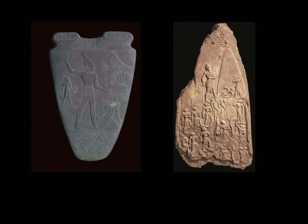Comparing the Palette of Narmer with the Stele of Narmer, we can see many similarities. Both figures are shown from a composite point of view — we see their chests from the front and their limbs and head in profile. Both show symbolic references to bulls symbolizing power and the ability to conquer enemies, and both use hieratic proportion to emphasize the relative importance of Narmer over everybody else in the composition.